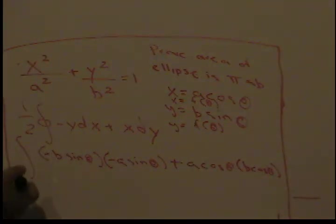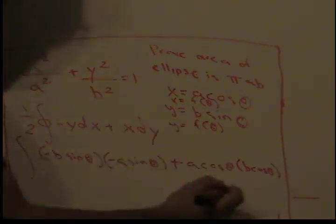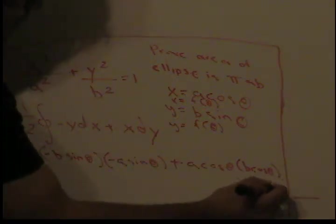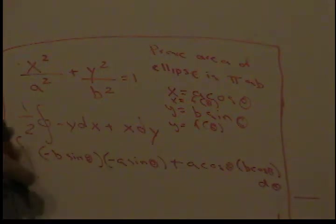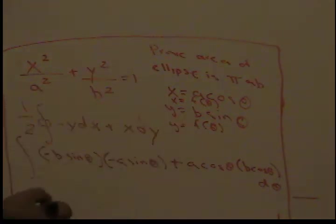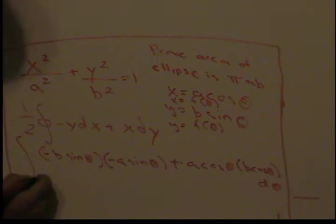We can tell that we're going to take this integral with respect to theta because the only variable we have here is theta. You might be asking what the limits of integration are going to be. It's an ellipse, so the limits of integration have to be from 0 to 2π - the entire ellipse.